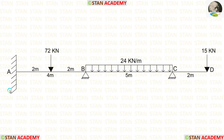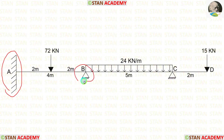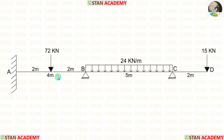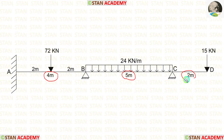At point A, there is a fixed support. At points B and C, there are hinged supports. Span AB is 4 meters long, span BC is 5 meters long, and the overhanging span CD is 2 meters long.